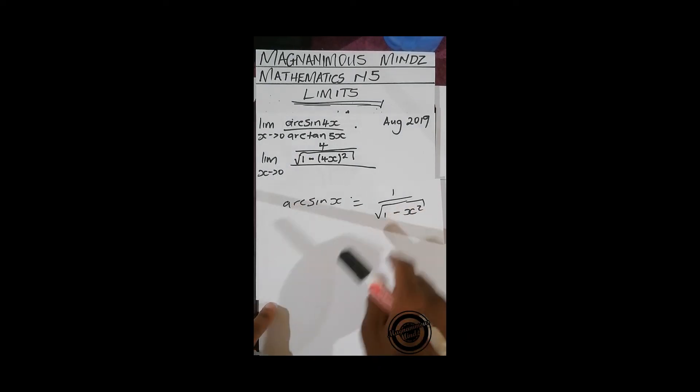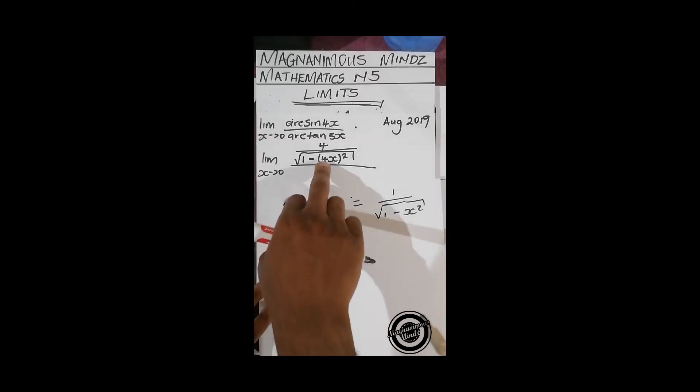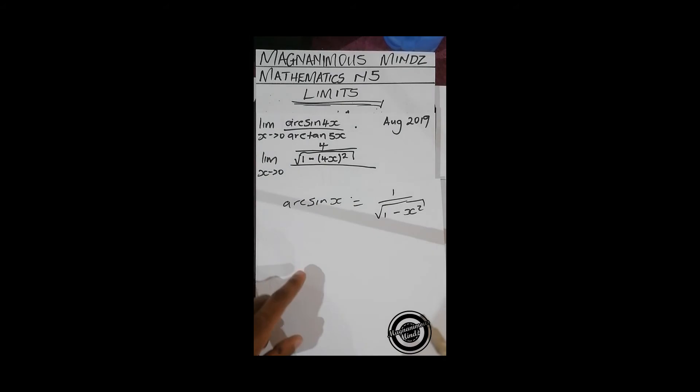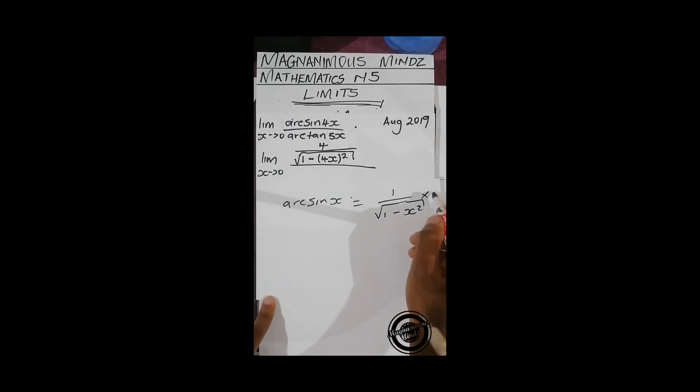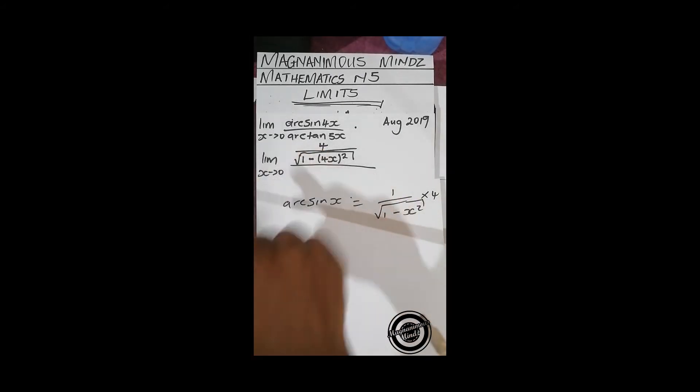And then using the chain rule, you further differentiate the inner function which is 4x in this case, and it's going to give you 4. So you multiply by it, giving you this 4 that we have here.